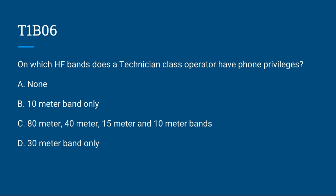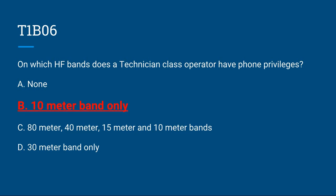T1B06: On which HF bands does a Technician class operator have phone privileges? A, none; B, 10 meter only; C, 80, 40, 15, and 10 meter bands; or D, 30 meter band only. The correct answer is B, 10 meter band only.